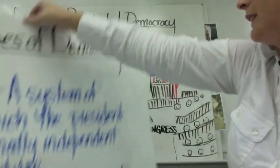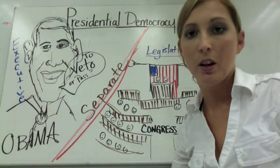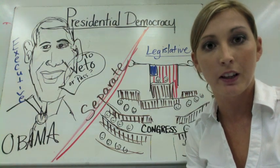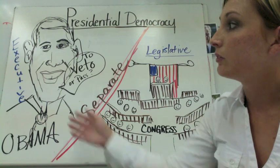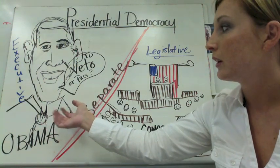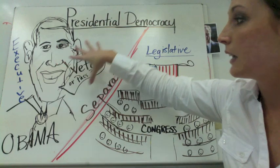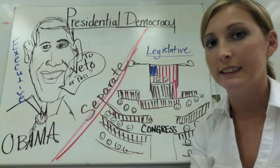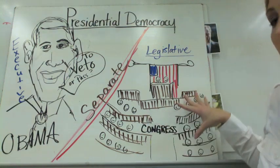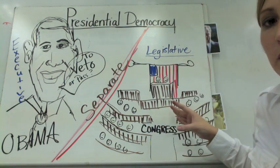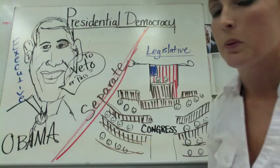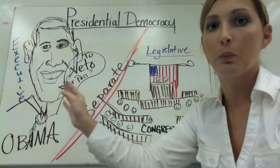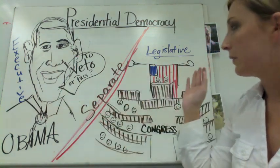The first is the presidential democracy. We're very familiar with the presidential democracy as the United States is considered one. I have Barack Obama on the left and he is saying 'to veto or to pass.' He is the executive branch and he is completely separate from the legislative branch, which would be the United States Congress. One thing you need to keep in mind with the presidential democracy is that the president, the executive branch, is completely separate from the legislative branch.